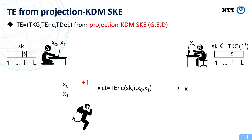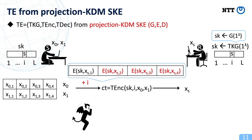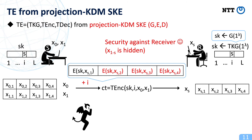I will explain that targeted encryption can be realized naturally from projection KDM-secure SKE. In this construction, when we generate a secret key of targeted encryption, we just generate a secret key of SKE. When we encrypt two messages x0 and x1 for the i-th bit S of the secret key SK, we encrypt x_S using the underlying SKE in a bit-by-bit manner as described in the slide. By decrypting these bit-by-bit ciphertexts, the receiver can correctly obtain x_S. The construction satisfies security against the receiver, because the ciphertext is completely independent of the message x_{1-S}.